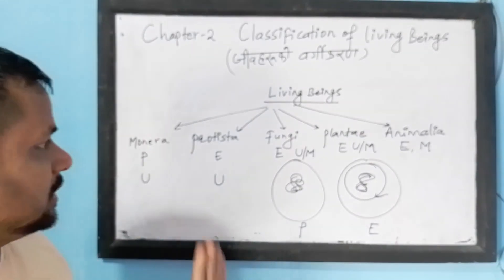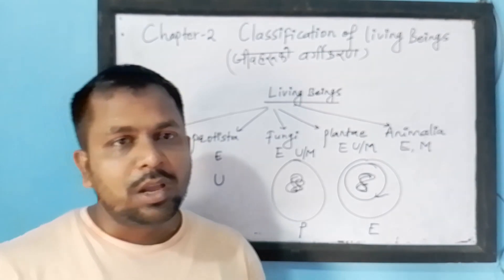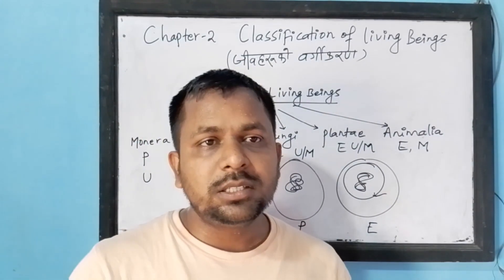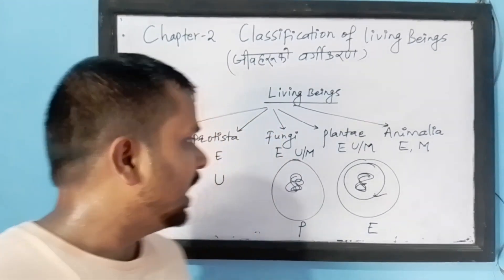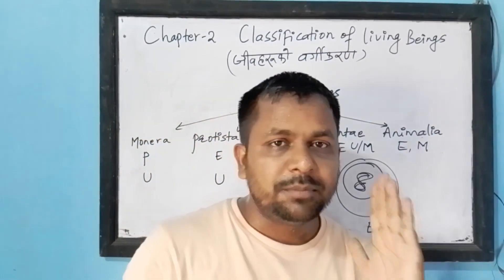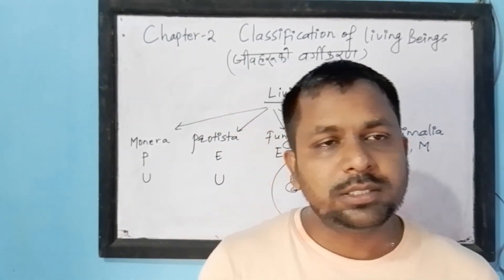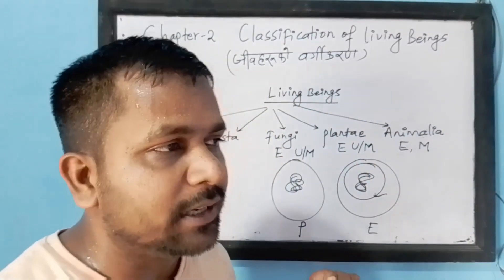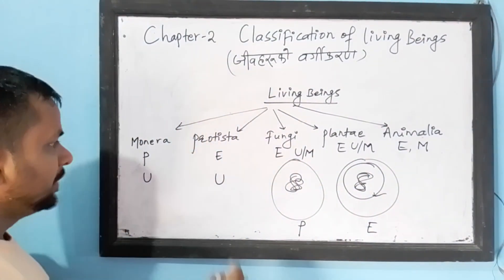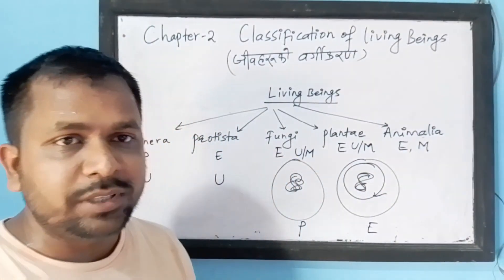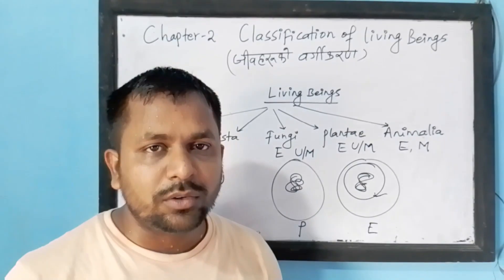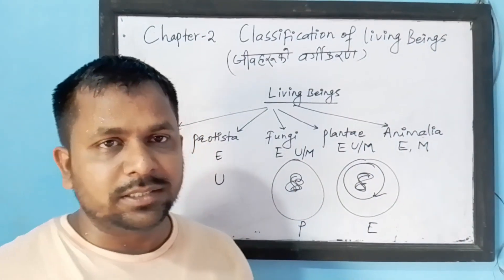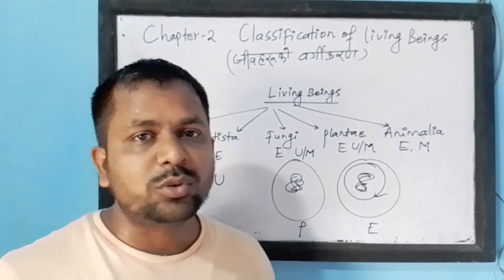Another basis for this division was the mode of nutrition — how an organism absorbs nutrients, and whether they are able to prepare their own food or not. Fungi do not have chlorophyll in them; they cannot prepare their own food. They especially depend on dead and decaying matter, so they are known as saprotrophic organisms.